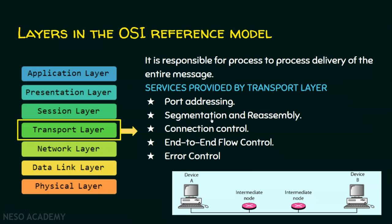The second service of the transport layer is segmentation and reassembly. If a computer has a very large message that cannot be sent as-is, it breaks the big message into smaller numbered segments. After reception of all the individual segments, the receiving computer can reassemble them to reconstruct the original data.